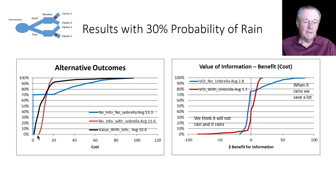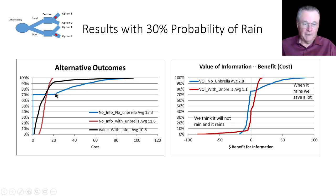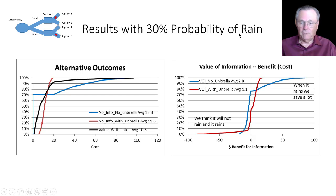It doesn't matter whether it rains or not. And if I don't buy the umbrella, there's a 70% chance it doesn't rain so I didn't incur any cost. But when it does rain, I have a big cost, which is really cleaning my clothes. So we can see the value with information has a lower cost than either one of these at a 30% probability of rain.